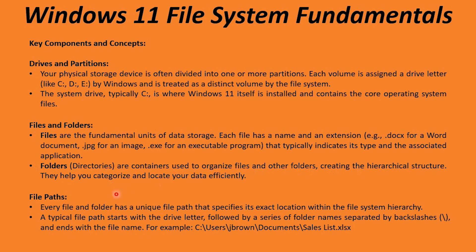A file path specifies the exact location of a file or folder within the file system. Paths start with the drive letter, followed by a series of folder names separated by backslashes, and end with the file or folder name. For example: C:\Users\jbrown\Documents\saleslist.xlsx — C is the Windows drive, followed by the Users folder, then the jbrown subfolder, then Documents, and finally the sales list Excel file.